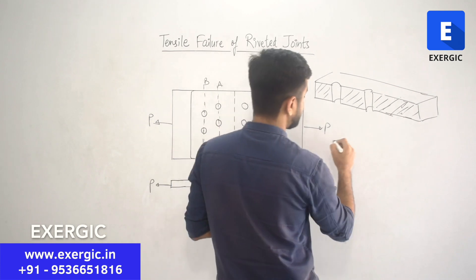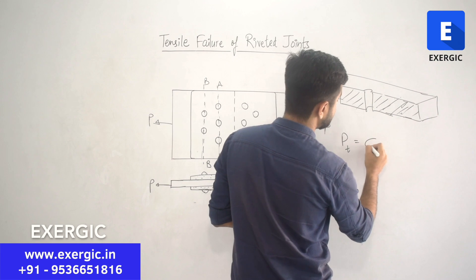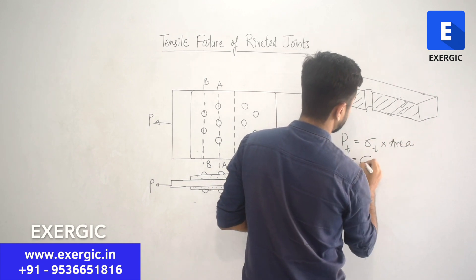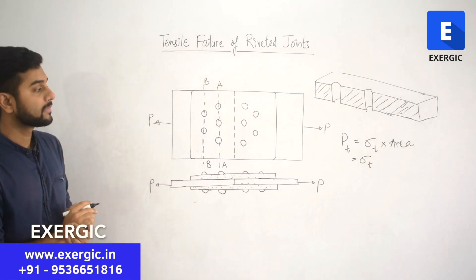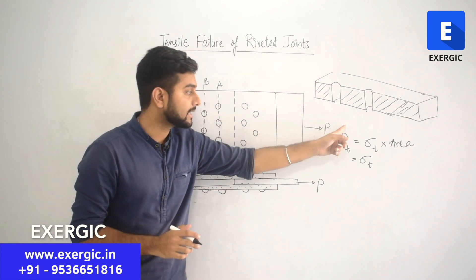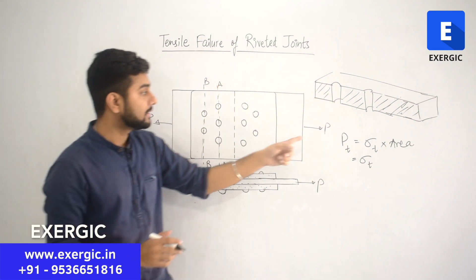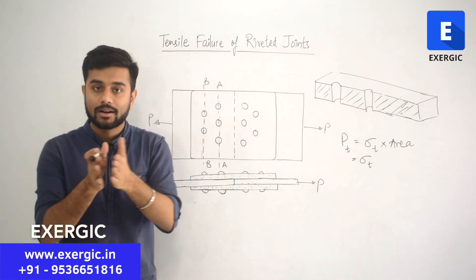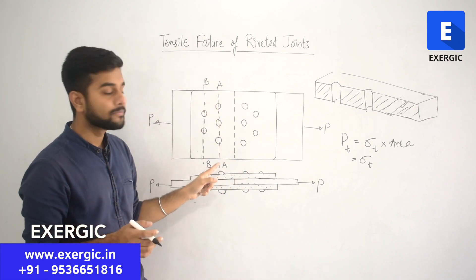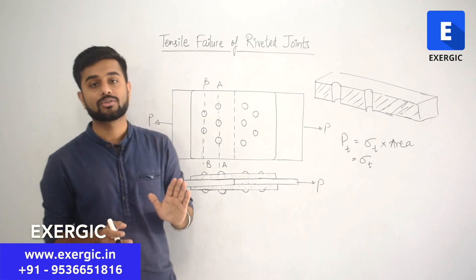If you look at tensile strength, you need to write PT is equal to σt multiplied by area which is to be failed from tensile failure. In case of AA, that area is more. In case of section AA, the area which needed to be failed through tension is less. So, tensile strength of the plate along section AA will be less than its tensile strength along section BB.